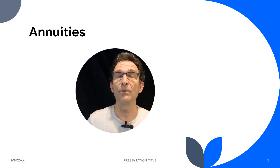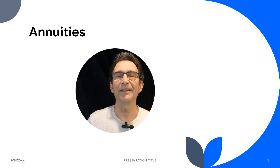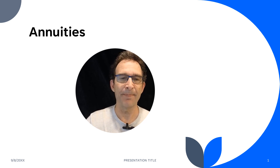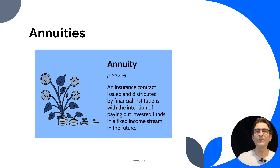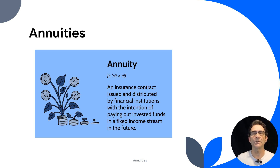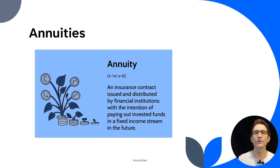Today we're going to be talking about annuities, an important subject that is on that exam. So let's jump in and learn about annuities. An annuity is an insurance contract that's issued and distributed by financial institutions with the intention of paying out invested funds in a fixed income stream in the future. This is a great product that you can sell to your customers that helps them get a guaranteed income stream, a valuable part of a person's investment portfolio and consideration for planning those years after retirement.